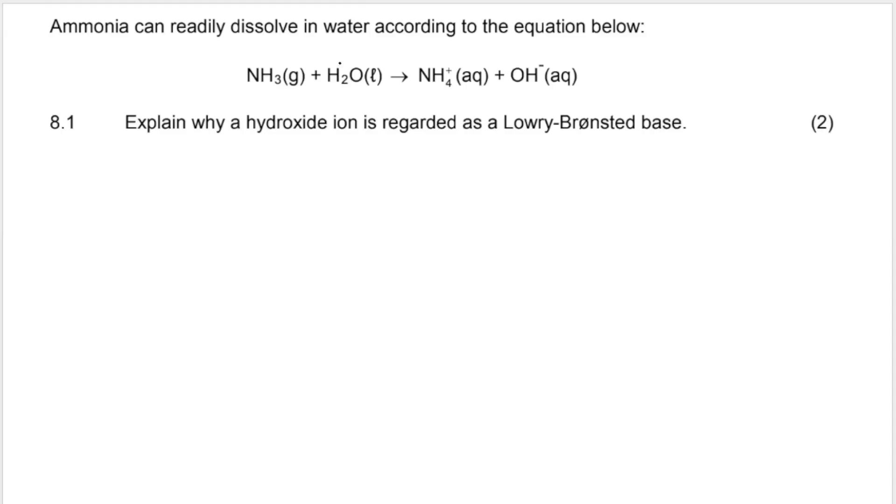So remember, Bronsted-Lowry called bases proton acceptors and this hydroxide ion over here has the ability to accept a proton. Think about it. If it accepts a proton, remember proton is a H+, what will it form? It will form H2O. And it was just negatively charged. If it accepts a positive, it's going to be neutral. So basically that is your reason. You're basically defining a Lowry-Bronsted base. Bases are proton acceptors and acids are proton donors.